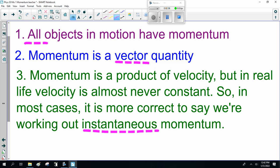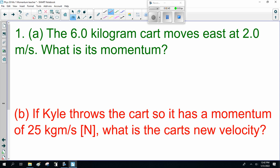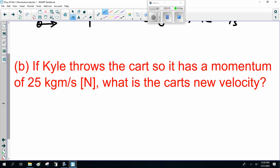Let's do a couple questions. A 6 kilogram cart moves east at 2 meters per second. What's the momentum? I have to draw a diagram. The formula is momentum equals mass times velocity. So the momentum is 6 kilograms times 2 meters per second, which equals 12 kilogram meters per second. That's the units for momentum. It doesn't have its own fancy unit like joules for energy or newtons for force.